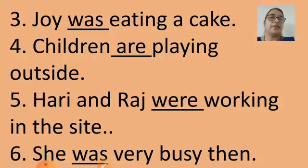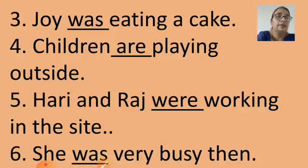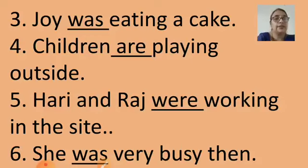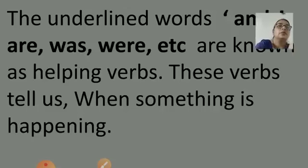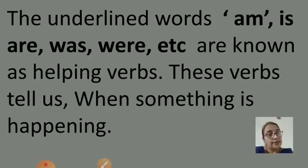Fifth sentence: Hari and Raj were working in the site. The helping verb is 'were', helping the word 'working'; Hari and Raj are the subject. Sixth: She was very busy then — here 'was' is the helping verb. In these sentences we have seen am, is, are, was, were — these words are helping the verbs in the sentences, so they are called helping verbs.